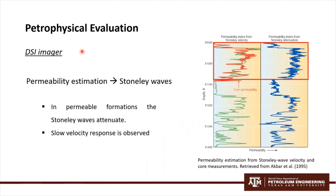Another important tool is the DSI imager, which gives a direct estimation of permeability using Stoneley waves. These waves propagate up and down the borehole and measure the energy state around the borehole. In permeable formations, the waves attenuate where a slow velocity response is observed. Here on the right side, we can notice the well-logged tracks of core permeability and the permeability estimation using Stoneley velocity, showing a good correlation between both, indicating that this permeability index works very well.